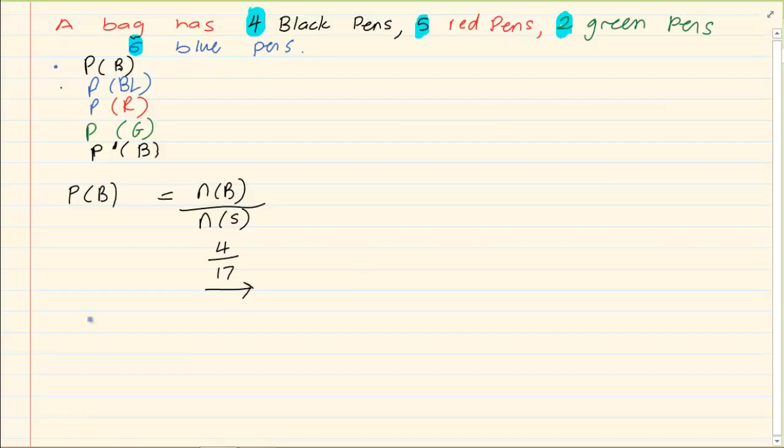Then what is the probability of the blue pen? Now we have n of the blue over n of the total. Now the blue pen is six and our total is seventeen. So the probability is six over seventeen.